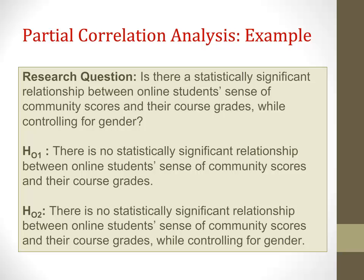Another important note: with a partial correlation, you still need to meet all the usual assumptions that you would for a Pearson's R — so linearity, normality, homogeneity, etc. Those become very important to look at and discuss as well.